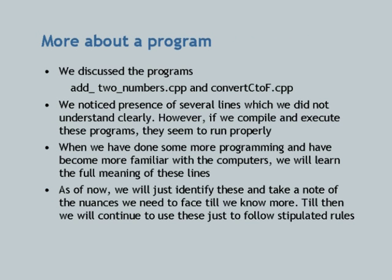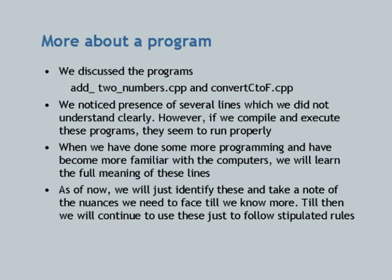We have discussed add2numbers.cpp and convert_c2f.cpp and noticed several lines we have no clue about. However, if we compile and execute the programs they will run properly. Next week you will have access to the machines — in the lab, these programs will be made available, you will download them, compile and run them to confirm they work correctly. We will learn the meaning of all these lines as we do more programming. For now we identify these lines and take note of the nuances we face.